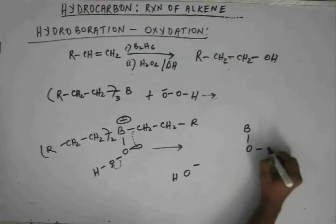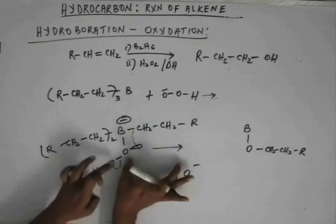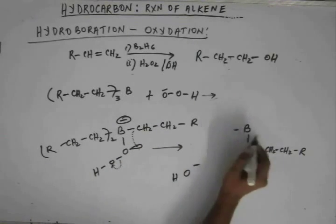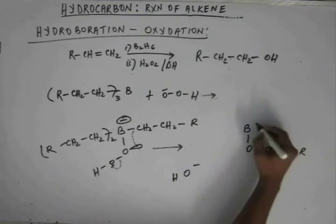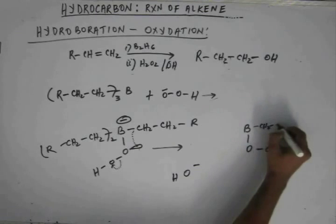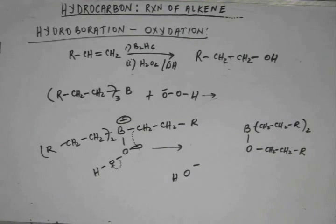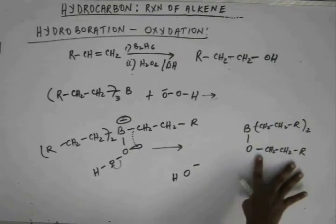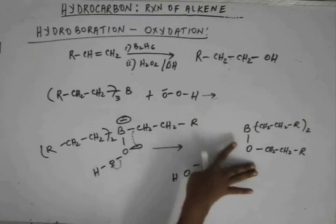This R and this oxygen will form a bond. This R is shown bonded with this oxygen. And rest of these two R groups will remain as it is. Now we have boron and this alkoxy part is attached with boron.